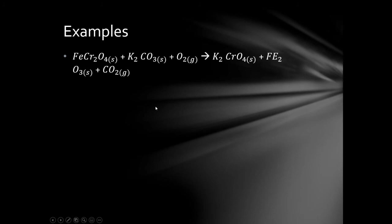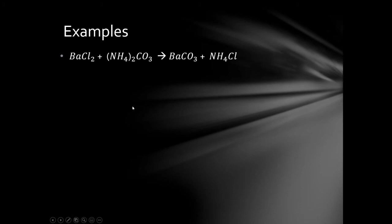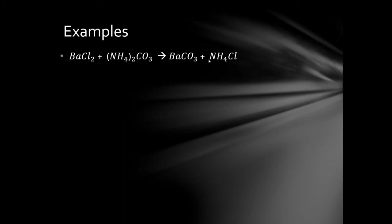Another example: ammonium chloride plus barium carbonate. The most complicated is ammonia — two ammonias on the product side, one on the reactant side. Put a 2 in front of NH4Cl, which also gives two chlorines — and there are already two chlorines on the product side. One carbonate here matches one carbonate; one barium matches one barium. So all I have to do is put a 2 in front of NH4Cl and this formula is balanced. The coefficients are 1, 1, 1, 2.